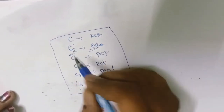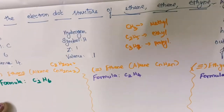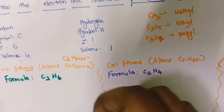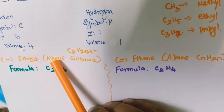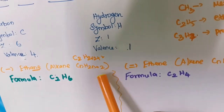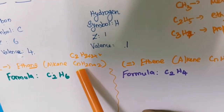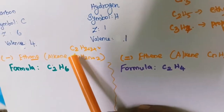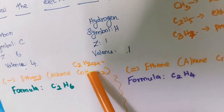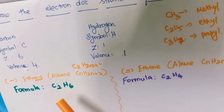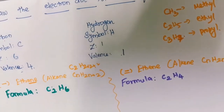For eth, how many carbons should there be? 2 carbons. What is the general formula for the alkane? The general formula of the alkane is CnH2n+2. I am going to substitute 2 in the place of n. So C2H, 2 into 2 plus 2. The molecular formula is C2H6.